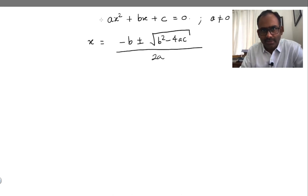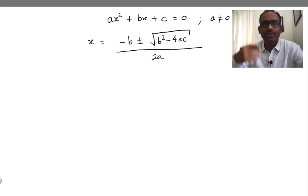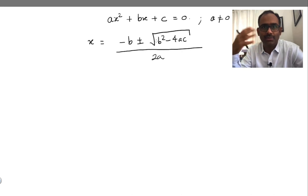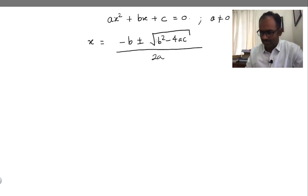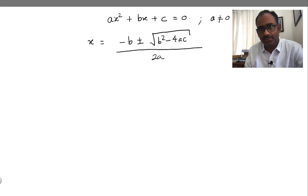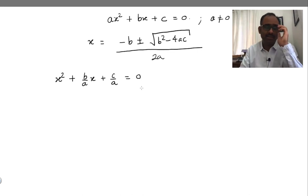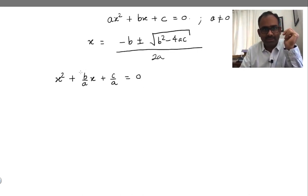Let's first look at this equation and ask: how many independent constants do you have? It looks like 3 — it looks like a, b, and c. But let's look carefully. I'll divide this equation by a, and I can do so because a is not equal to 0. Dividing by a gives x squared plus (b/a)x plus (c/a) equals 0.